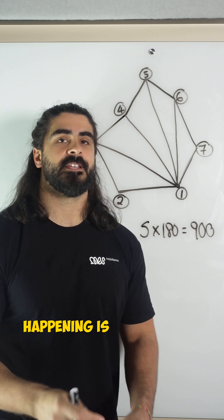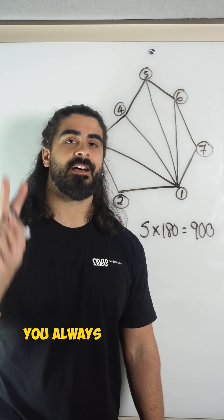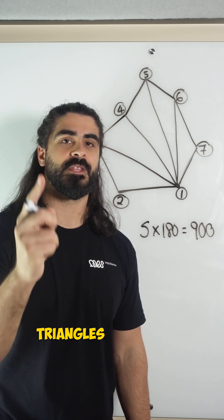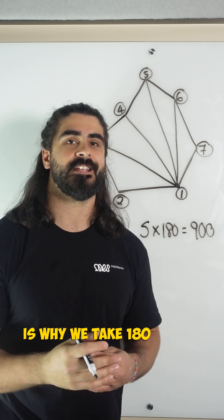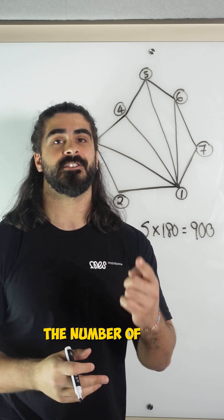So in general, what's happening is that for any shape, you always have two less triangles within that shape, which is why we take 180 and we multiply it by the number of sides minus two.